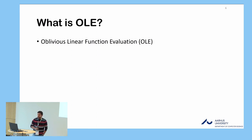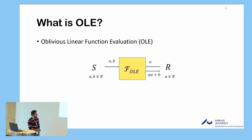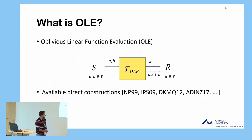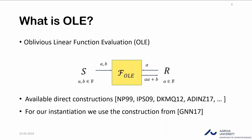These results are in the OLE hybrid model. OLE stands for Oblivious Linear Function Evaluation — a two-party primitive where one party, the sender, holds a linear function AX + B, and the other party holds an evaluation point alpha. At the end of the protocol, the receiver learns A·alpha + B and the sender learns nothing. There are many available constructions, both passively and actively secure. For our specific PSI protocol instantiation, we use a maliciously secure OLE protocol from GNN'17, which also achieves constant communication overhead.